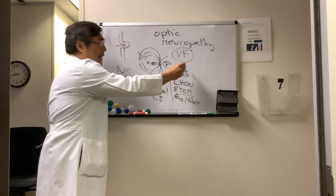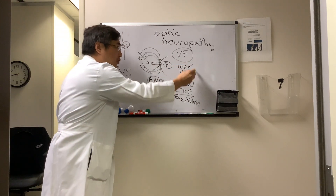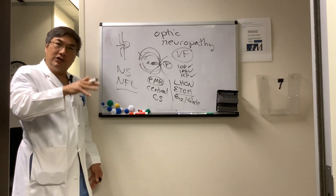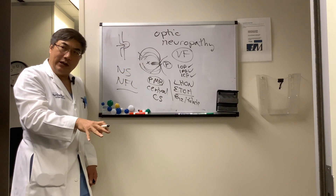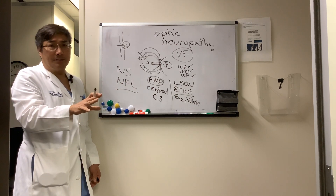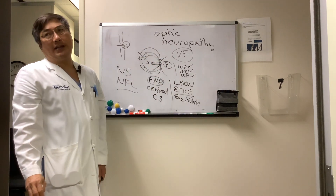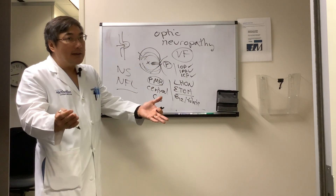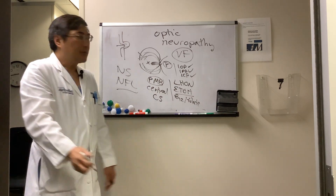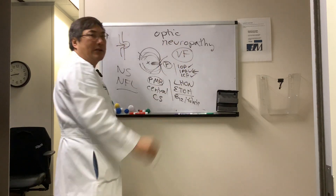Things like papilledema, glaucoma, and intrapapillary drusen spare the papillomacular bundle. So if you lose your central acuity, you should really be thinking that maybe the patient has something else and not a pressure-related phenomenon alone — or that it's very end-stage and late, or that it's fulminant like acute angle-closure glaucoma, acute fulminant IIH, or ischemic optic neuropathy in drusen.